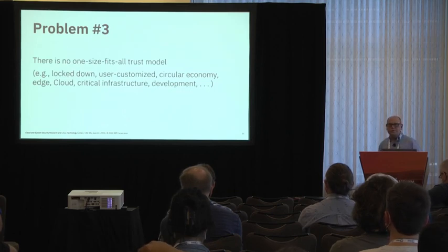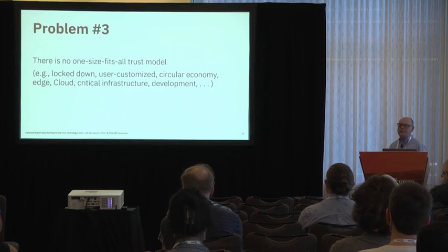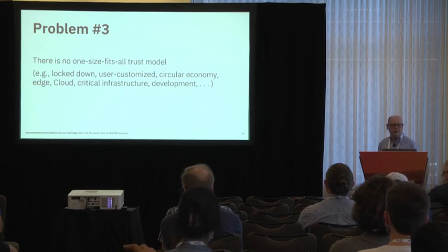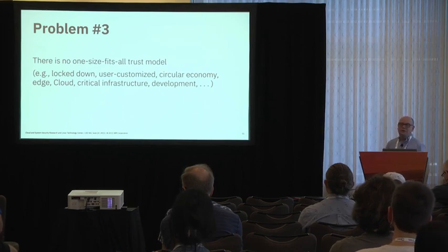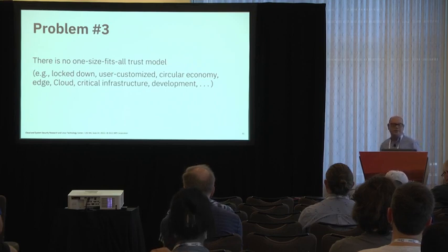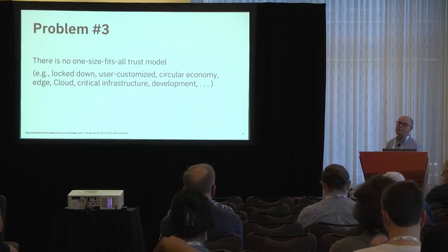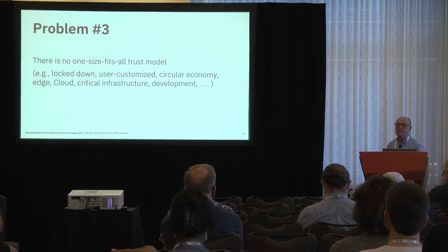Problem three is there's not a one-size-fits-all security model. A lockdown appliance system is very constrained — you can control what goes on inside it and create very specific policies. A general purpose system might need various certificates to verify various pieces of software. In a circular economy, people may want to take the keys on their machine, destroy them, and put somebody else's keys in their place. For critical infrastructure, you may require multiple signers and want to test the kernel and packages before putting them into production.